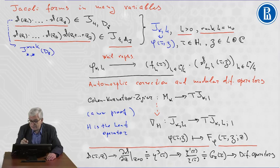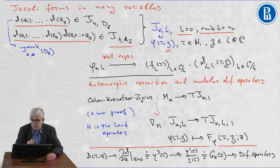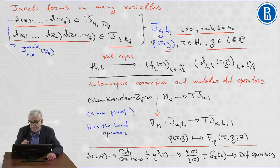Jacobi forms in many variables are Jacobi forms with respect to some positive definite lattice of rank N. It means that the second variable, the abelian variable in the Jacobi form, is a vector in the complexification of the positive definite lattice, a vector of dimension N.